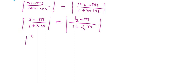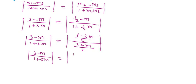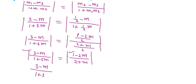So we have (3 minus m) upon (1 plus 3m) on the left side. Taking the LCM on the right side, the numerator becomes (1 minus 2m) and the denominator becomes (2 plus m). Therefore, (3 minus m) upon (1 plus 3m) equals plus or minus (1 minus 2m) upon (2 plus m).